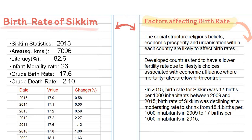Factors affecting birth rate: the social structure, economic prosperity, and urbanization within each country are likely to affect birth rate. Developed countries tend to have a lower fertility rate due to lifestyle choices associated with economic excellence, where mortality rates are low and birth control is more prevalent. The birth rate for Sikkim was 17 births per 1,000 inhabitants in 2015, declining from 18.1 births per 1,000 inhabitants in 2009 to 17 births per 1,000 inhabitants in 2015.